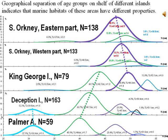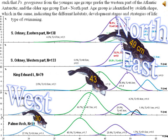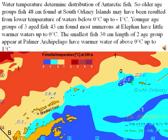Geographical separation of age groups on the shelf of different islands indicates that marine habitats of these areas have different properties. Younger age groups of Georgianus prefer the western part of the Atlantic Antarctic, while the older age group prefers the eastern, northern part. Age group is identified by otolith shape, which indicates different habitats, development stages, strategies of life, and type of swimming. Water temperature determines distribution of Antarctic fish.